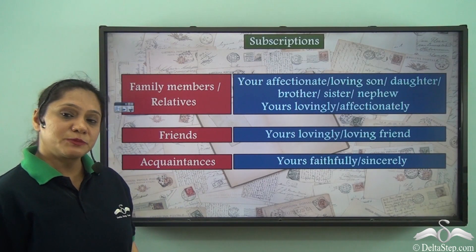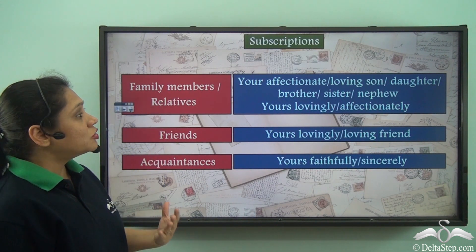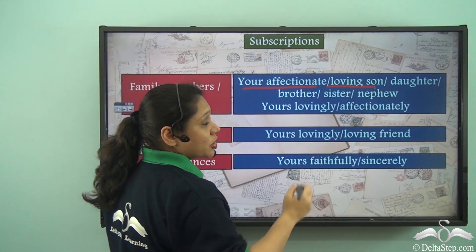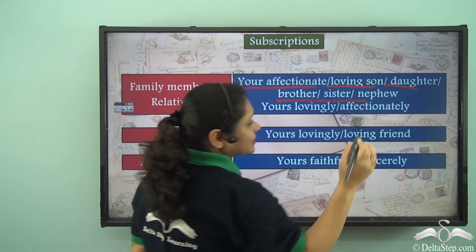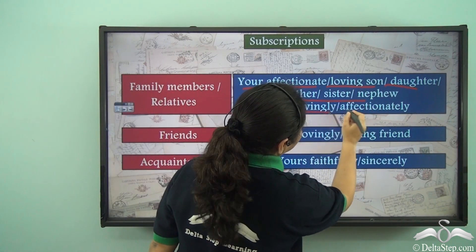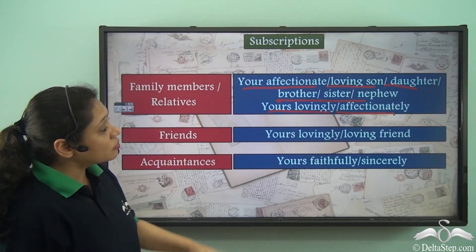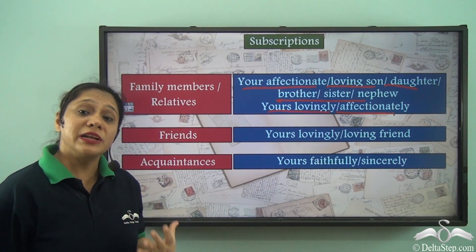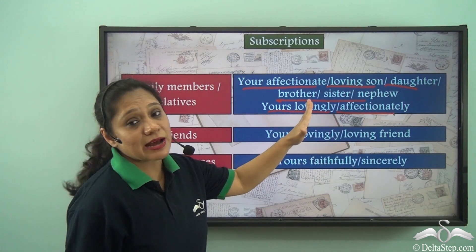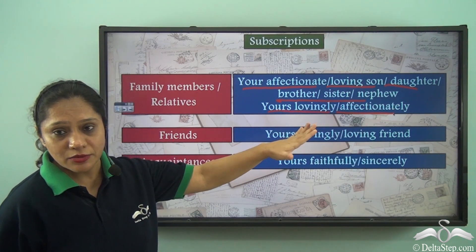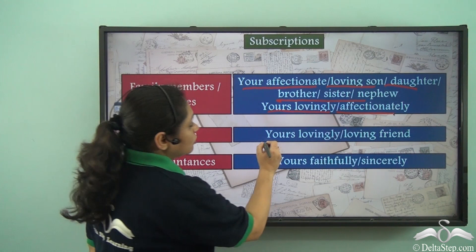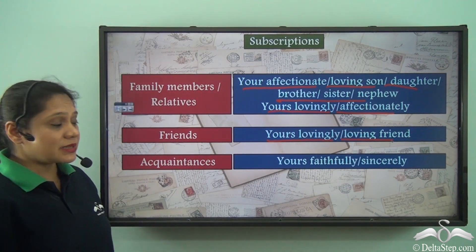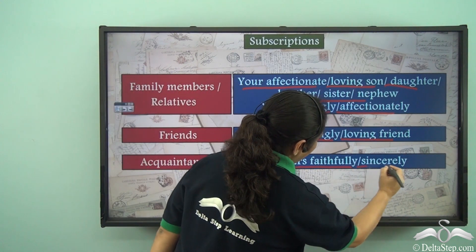Now let us look at the various subscriptions. For family members or relatives, you can use 'Your Affectionate,' 'Your Loving Son,' 'Your Loving Daughter,' 'Your Loving Brother,' 'Sister,' 'Nephew,' 'Yours Lovingly,' or 'Yours Affectionately.' When we use 'Yours Lovingly' or 'Yours Affectionately,' we do not add the relation name — you cannot write 'Yours Lovingly Brother' or 'Yours Lovingly Sister.' For friends, you can use 'Yours Lovingly' or 'Loving Friend.' For acquaintances, we use 'Yours Faithfully' or 'Yours Sincerely.'